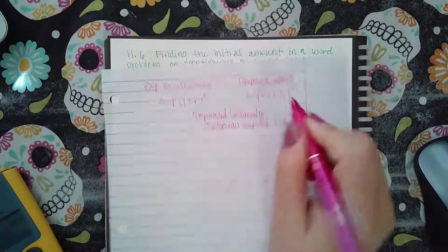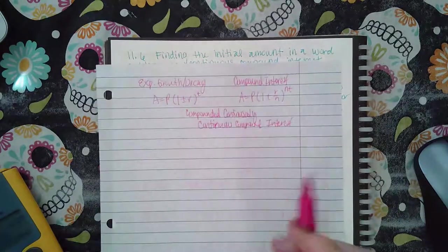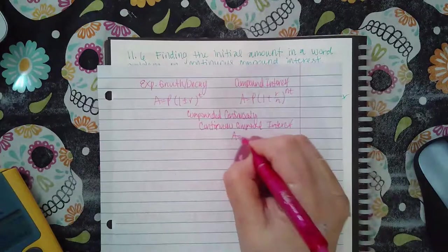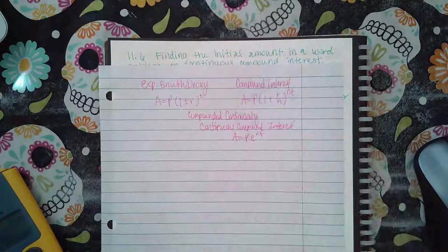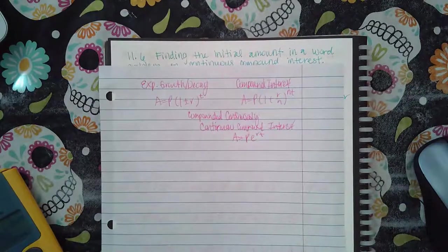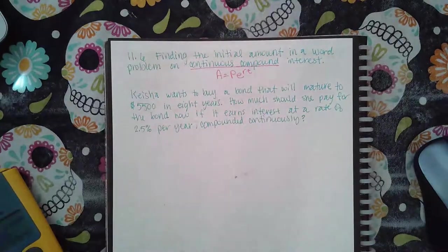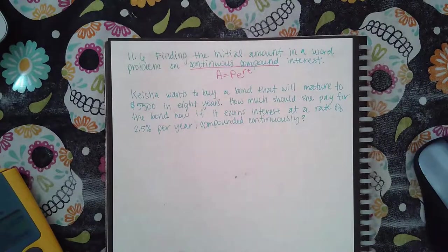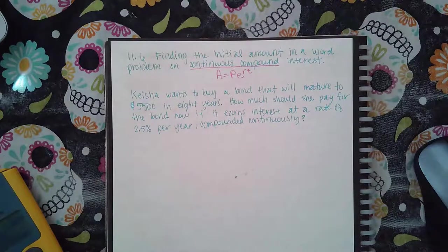Either way, whichever word comes from the other, it doesn't matter. You can say it either way. It's this formula. So you have three different formulas depending on the situation. Now this one does say the word continuous and compound together. So I know it's this formula here.